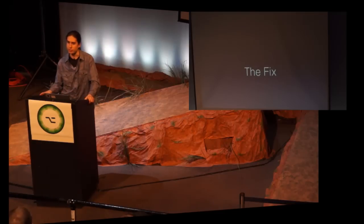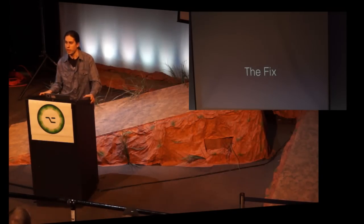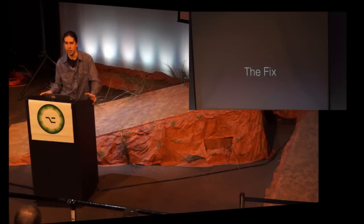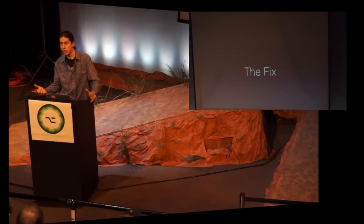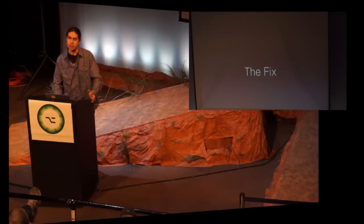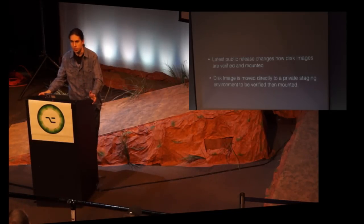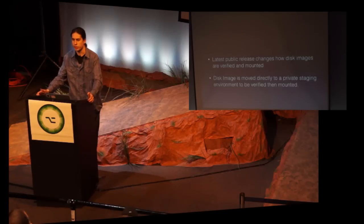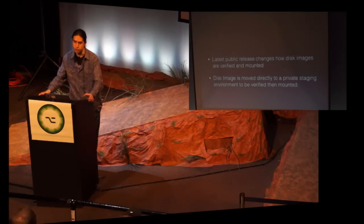So how do you fix something like this? The same way you handle thread-unsafe objects in Objective-C or Swift — you're going to want to treat your file system like a thread-unsafe object, because it can change underneath you between operations. While you're checking to make sure your file exists, it could change and not exist by the time you go to open it. The fix in the latest public release was to ask the disk image to be sent over directly and written into the private staging environment, bypassing any access from the user so nothing else can touch it and the verify can happen uninterrupted.